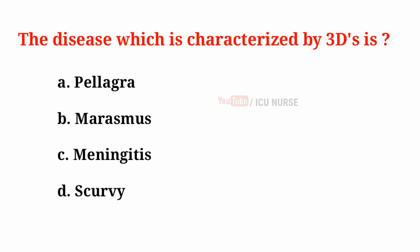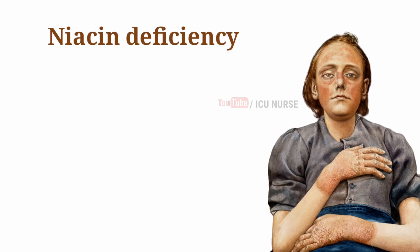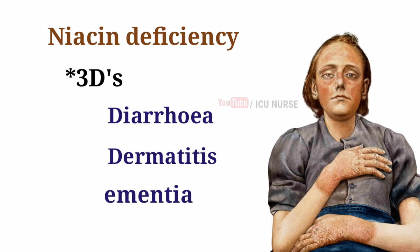The disease which is characterized by three D's is: A. Pellagra, B. Marasmus, C. Meningitis, D. Scurvy. And the correct answer is A. Pellagra. Pellagra is caused by the deficiency of niacin. Pellagra is characterized by three D's: Diarrhea, Dermatitis, and Dementia.